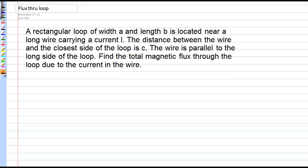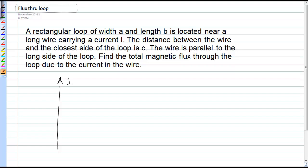In this problem, we're finding the magnetic flux through a rectangular loop. The source of the magnetic field will be a long, straight wire carrying current I.